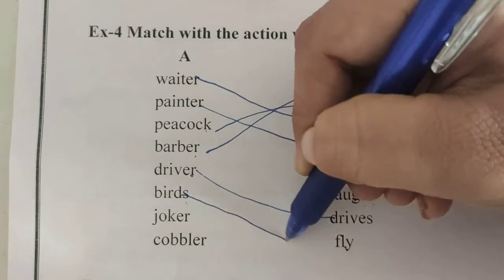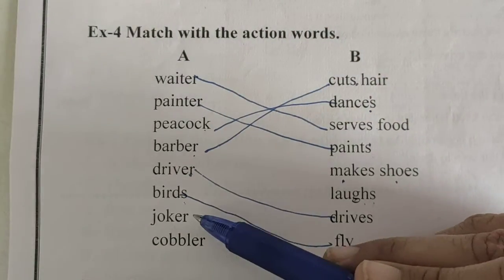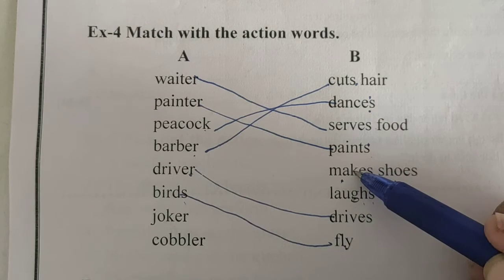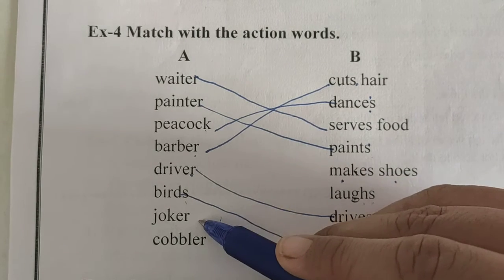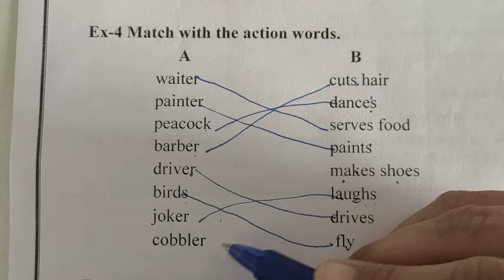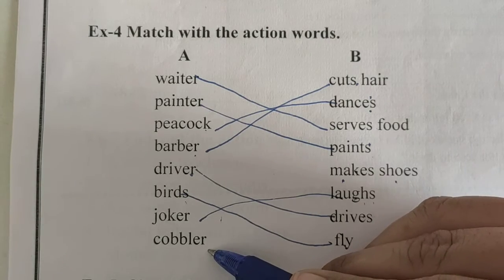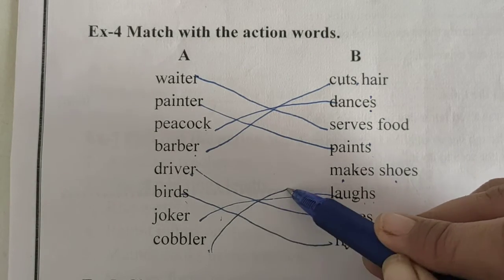We have to match birds with fly. Then joker — joker makes shoes? No. Joker laughs? Yes. Next is cobbler. Cobbler makes our shoes.